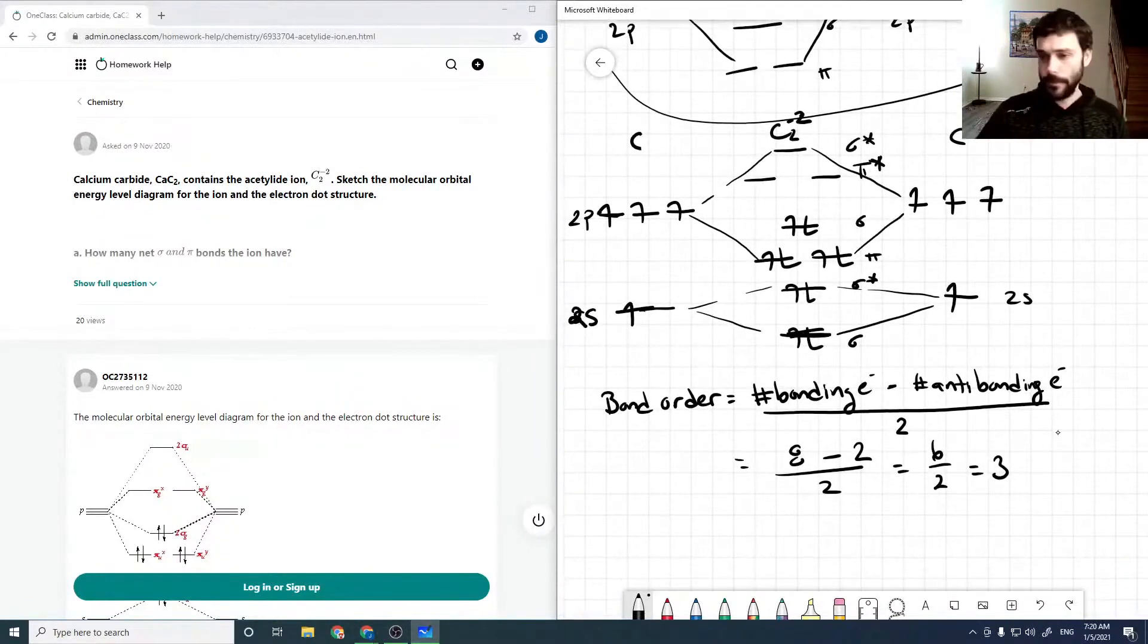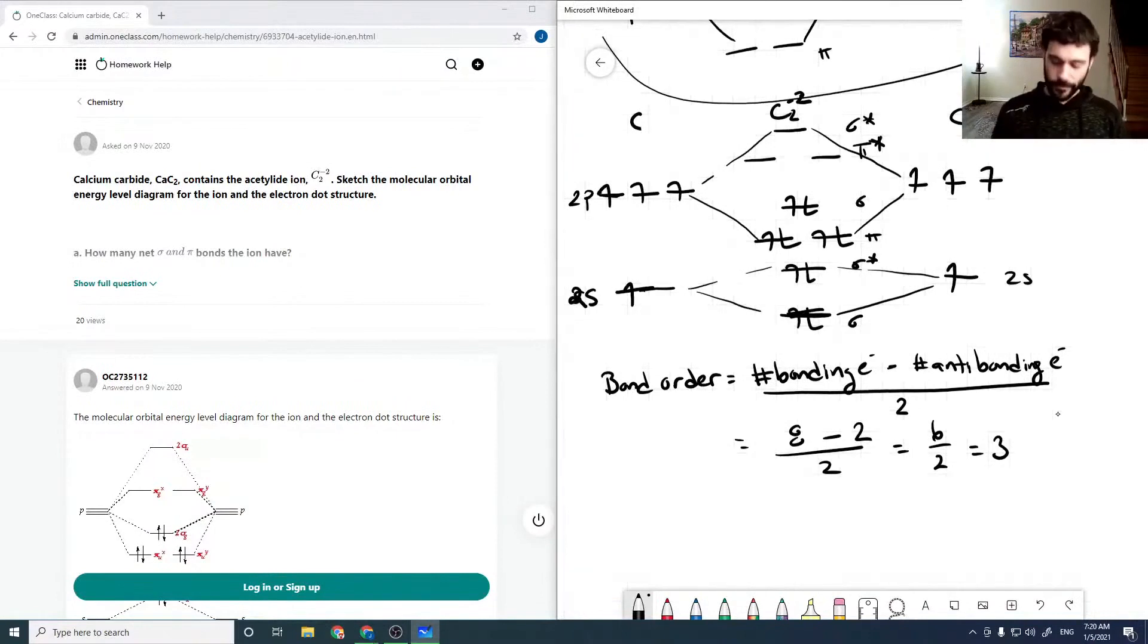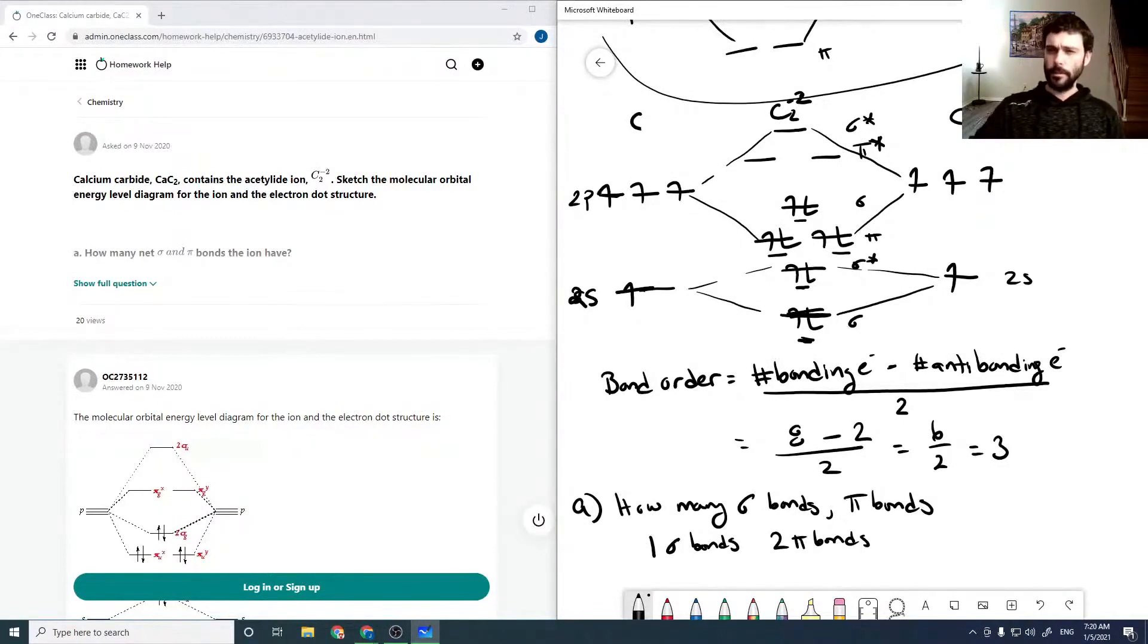So the questions, there's five questions asked in this question, there's five smaller questions. So the first is how many sigma bonds and pi bonds. So we can see here that we have one, two pi bonds and a sigma bond. So there's one sigma and two pi bonds. So that would be net as well, because this sigma bond is being canceled with this sigma anti-bond. So you just count the top ones, basically. Very similar to counting valence.